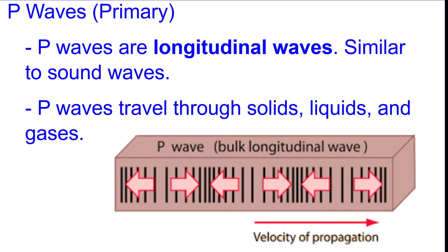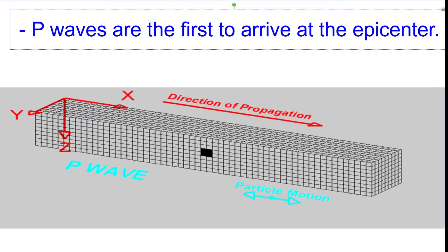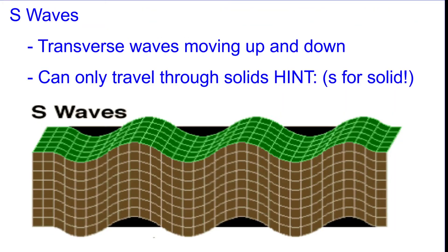A couple of facts about the P wave: it's the first wave that comes out of the earthquake, it's longitudinal, and it can travel through a solid, liquid, or gas. The P wave is always going to be the first wave to arrive because it's really fast. The S wave is transverse — it looks like a tidal wave — and it can only travel through a solid, which is why I put S for solid. S is also for second and slow, because this wave doesn't hit until after the P wave.